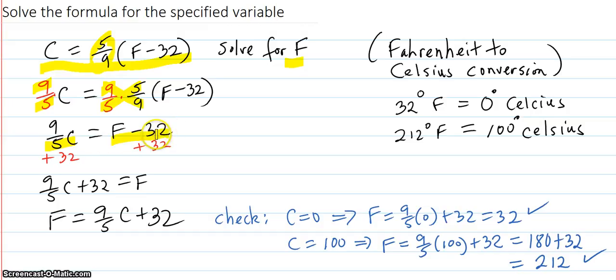Then the 32 is in our way. So we're going to perform the opposite operation and add 32 to both sides. We rewrite the left side like this, and now the F is alone. And then we rewrite the equation from left to right with the F solved for.